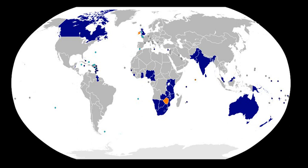The Commonwealth of Nations is a voluntary association of 53 sovereign states. Nearly all of them are former British colonies or dependencies of those colonies. No one government in the Commonwealth exercises power over the others, as is the case in a political union. Rather, the Commonwealth is an international organization in which countries with diverse social, political, and economic backgrounds are regarded as equal in status, and cooperate within a framework of common values and goals, as outlined in the Singapore Declaration issued in 1971.